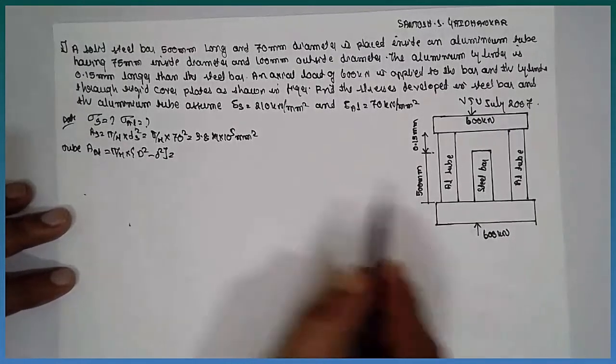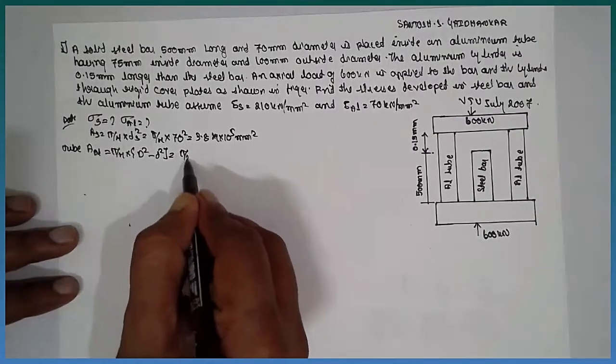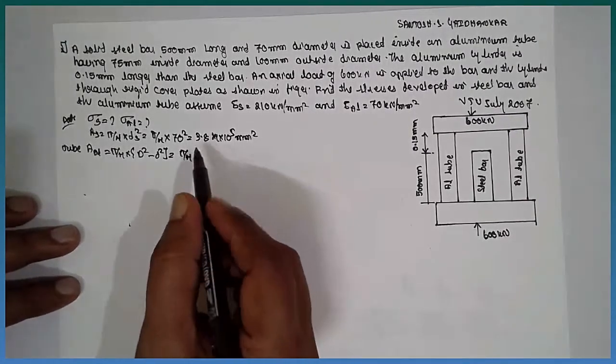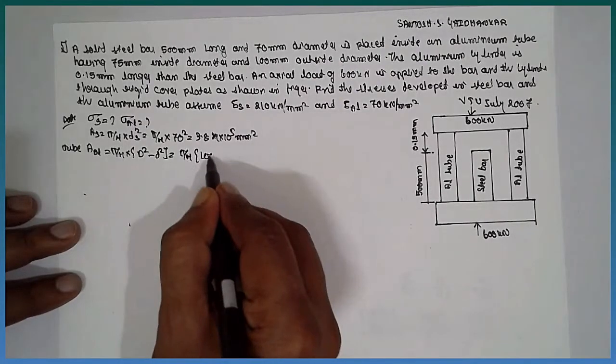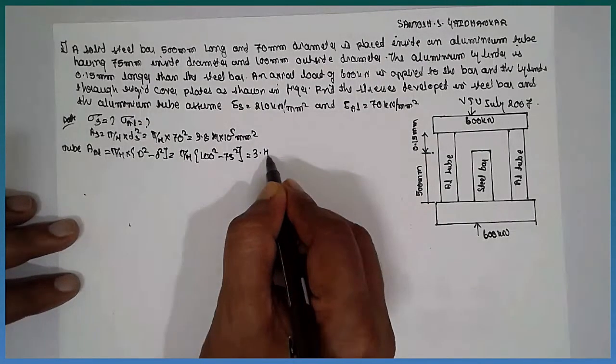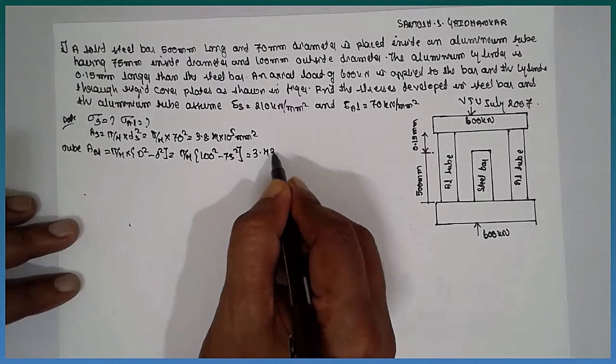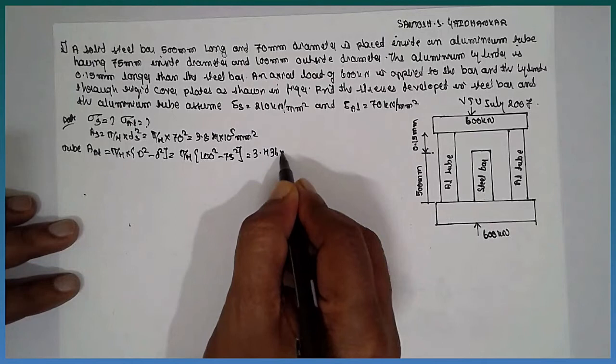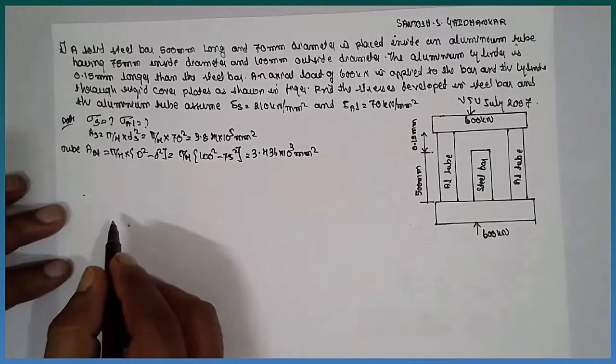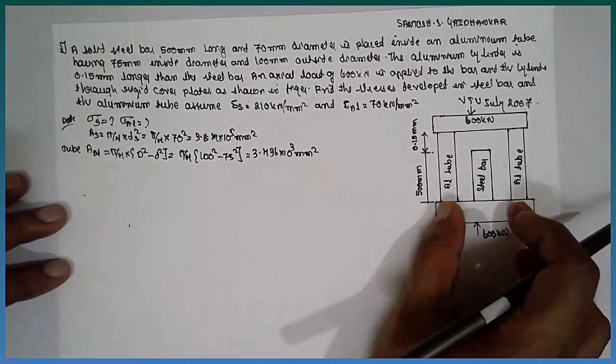It is a tube here. If it is a solid structure, you can go for only d square. Pi by 4, larger diameter, outer diameter is 100, 100 square minus 75 square equals 3.436 into 10 raised to 3 mm square. It is a hollow cylindrical tube, not the bar.